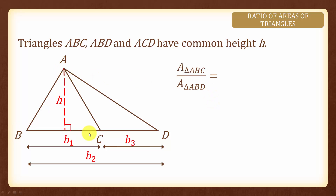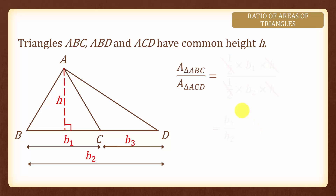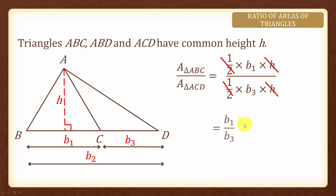Area of triangle ABC over area of triangle ABD, using the formula for finding area of triangles, equals one-half times B1 times H over one-half times B2 times H. The halves cancel and H over H equals 1, so it simplifies to B1 over B2 — the ratio of their bases. Similarly, area of triangle ABC over area of triangle ACD equals B1 over B3.